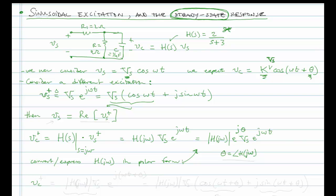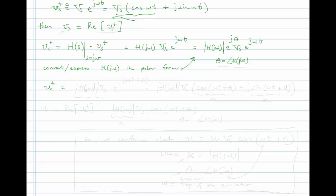Let's keep going. Vc plus, then, is magnitude of h of j omega times capital Vs. This is just a constant, a real valued constant here. Obviously, a constant that's dependent on omega, but not a function of time. And it's real valued, always. Times e, and now I'm going to combine the e to the j theta and the e to the j omega t. So it'll be e to the j omega t plus theta, where theta, as before, is the angle of h of j omega.